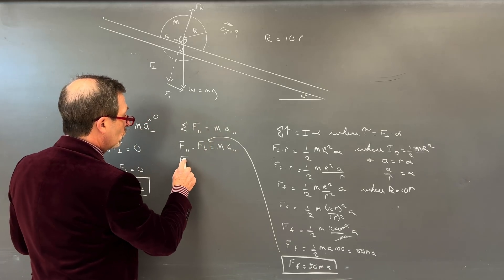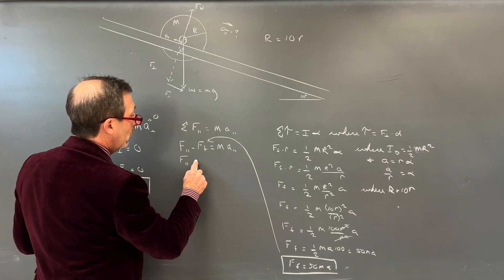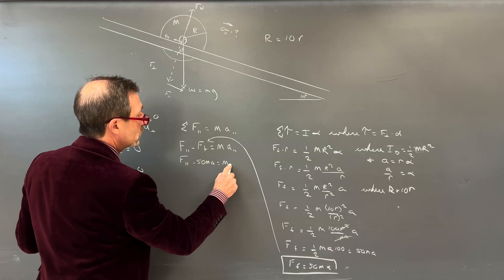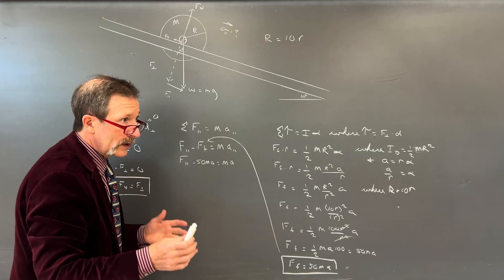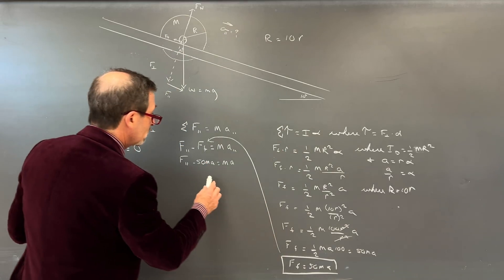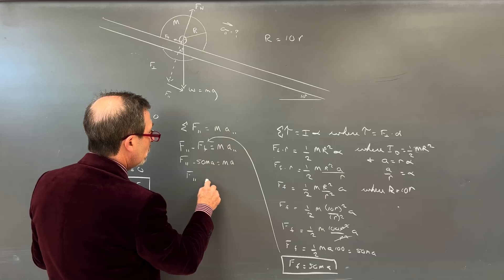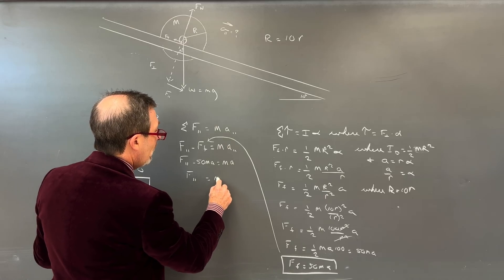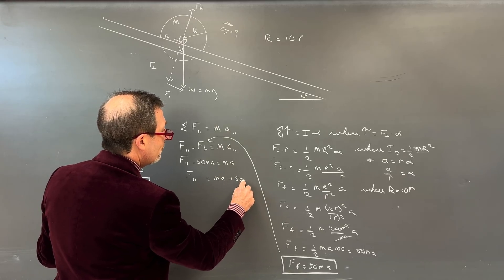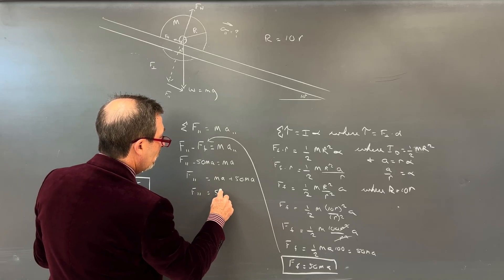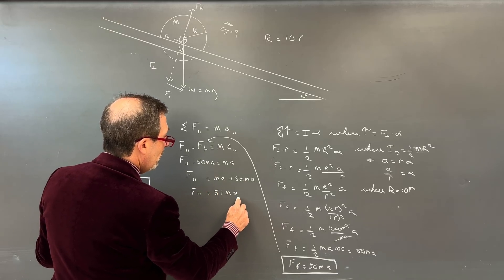Force of friction equals our 1 half mass. And then I've got R squared all over r. And that r down here is now going to be squared when I take it down. Let's take this into account. Let's say where big R equals 10 r.